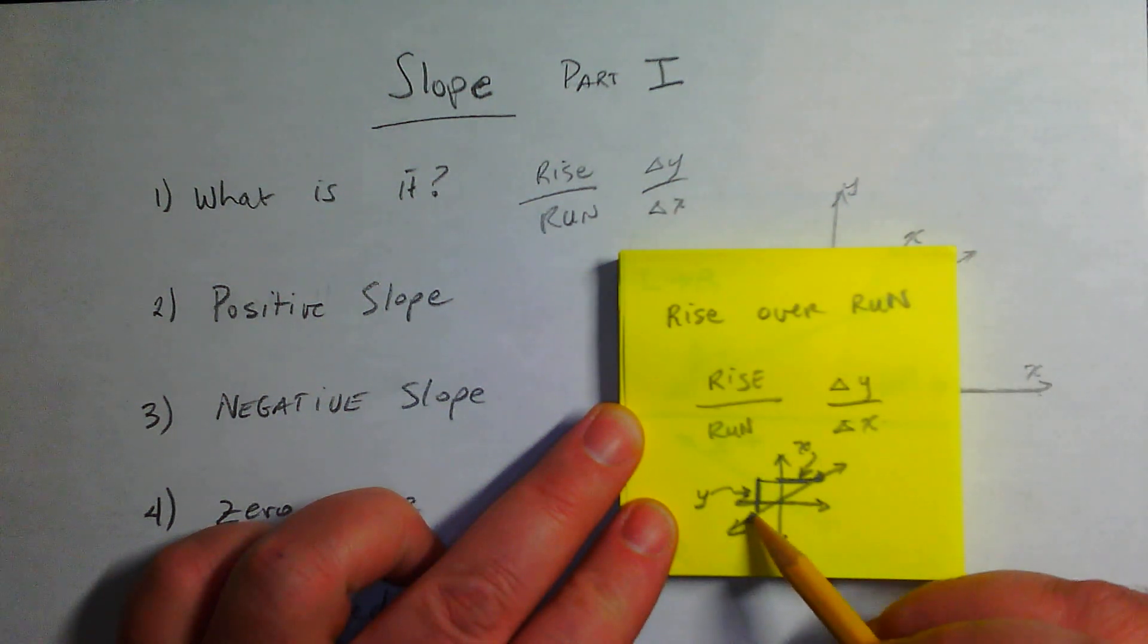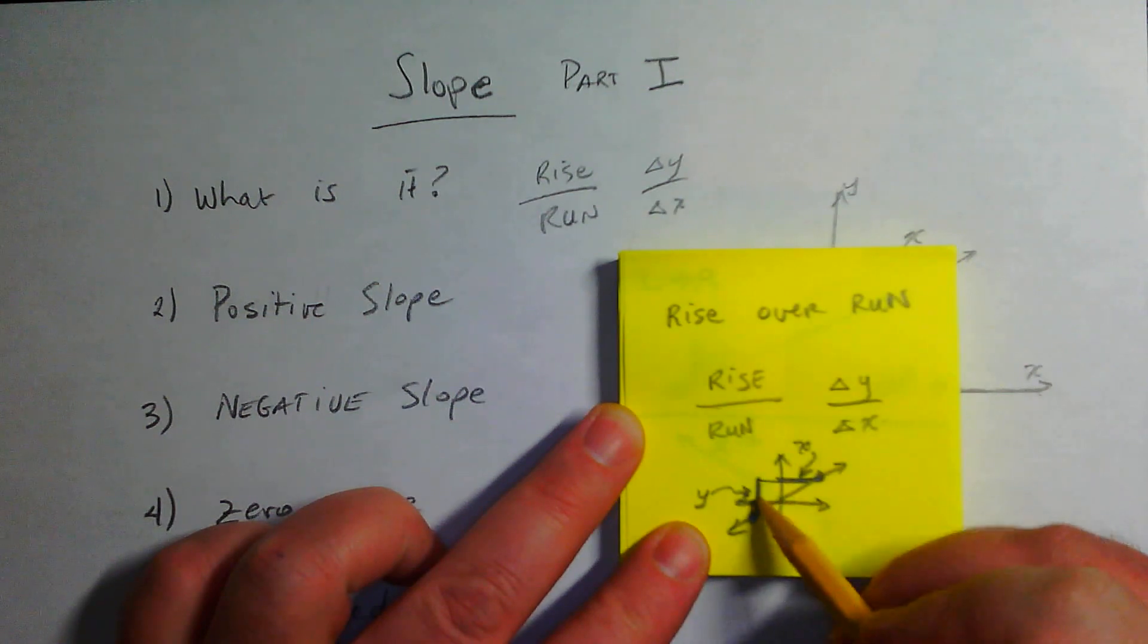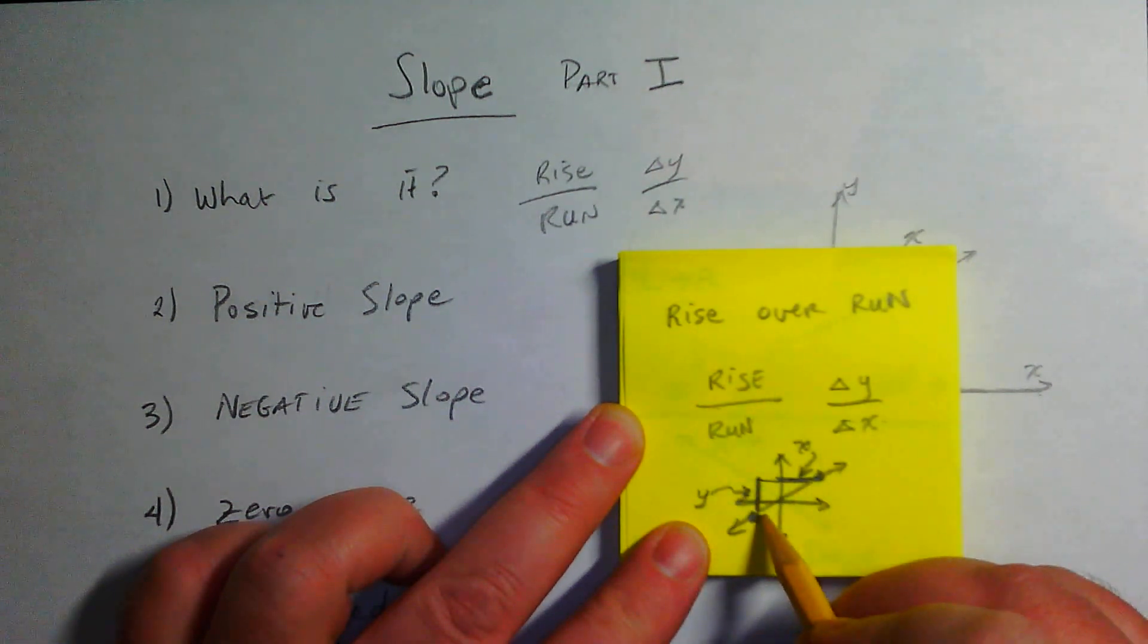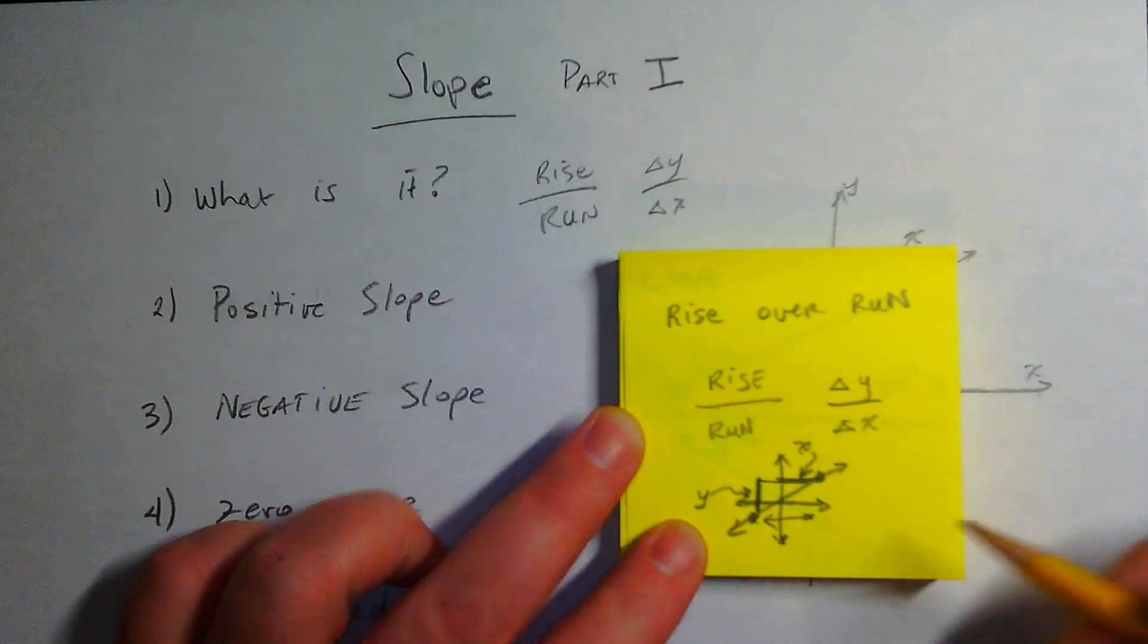If you want to see how far it went up, that's the change in y. From here to here, how far up does it go? That would be the y. How far over from left to right it goes? That would be the x.